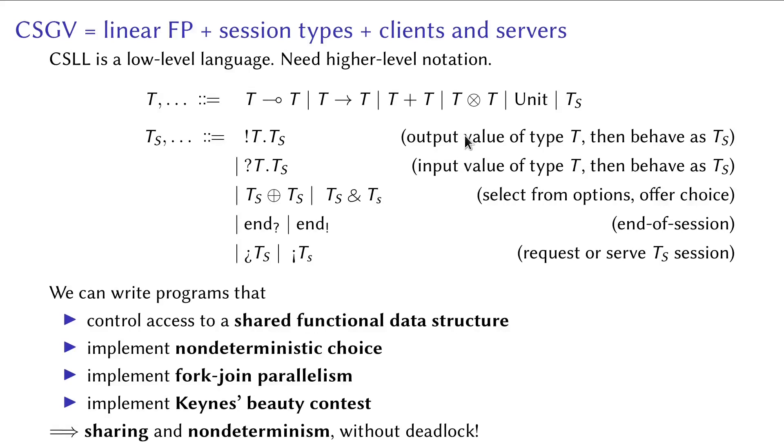At some point, we realized that CSLL is a very low-level language, and it's tedious to write programs in it. We therefore made a high-level language CSGV, which is linear functional programming with session types and client-servers based on Wadler's GV. In CSGV, we are able to write more examples. We defined a server of data structure to which each client has atomic access. We defined a choice process that returns zero or one randomly. We implemented fork-join parallelism. Finally, we implemented Keynes's beauty contest, where each client votes for a candidate and hears back the result in a single session. These examples demonstrate that our system allows some degree of sharing and non-determinism while being deadlock-free.